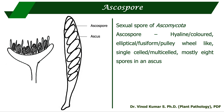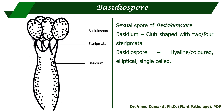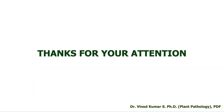Examples of ascospores: Sclerotinia sclerotiorum produces hyaline, elliptical, single-celled ascospores; Magnaporthe grisea (rice blast) produces hyaline, fusiform, multiseptate ascospores; Talaromyces and Eupenicillium produce pulley-wheel-like ascospores. Coming to basidiospores — the sexual spores of Basidiomycota — the basidium is a club-shaped structure with two or four sterigmata from which basidiospores are borne. The basidiospores may be hyaline or colored, and are elliptical and single-celled. Thanks for your kind attention; if you have any queries you can contact me through my email.